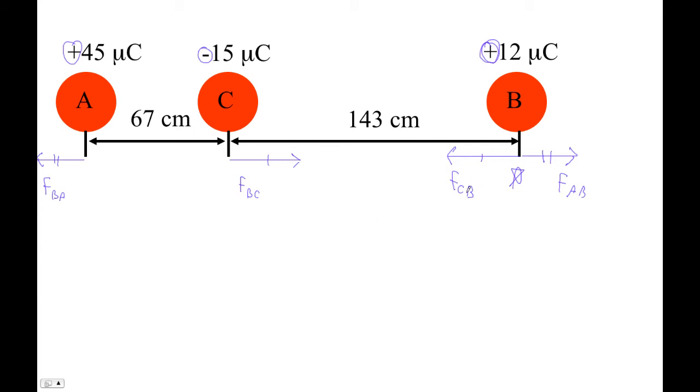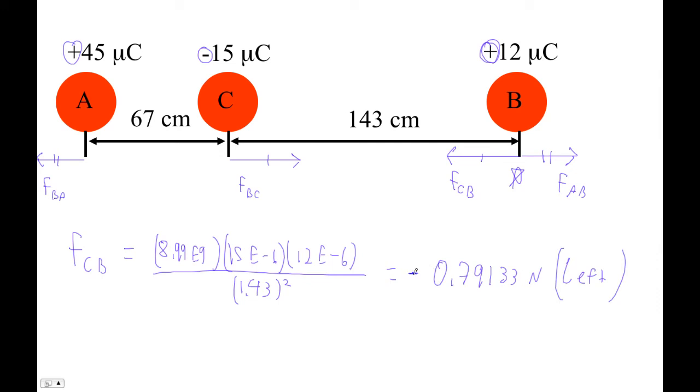Now, all we have to do now is just figure these out. So the force of C on B is going to be 8.99 E9. C is 15 E minus 6. And then this is 12 E minus 6. And then let's divide by, what's our radius here, 1.43? So let's figure that out. 8.99 E9 times 15 E minus 6 times 12 E minus 6 divided by 1.43 squared. And this is 0.79133 Newtons. And this is the force of C on B. So C is attracting B to the left, so this is to the left. So I'm going to make that negative X direction.